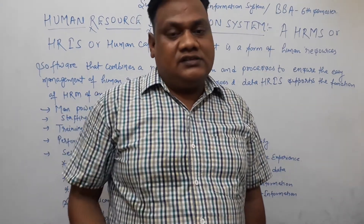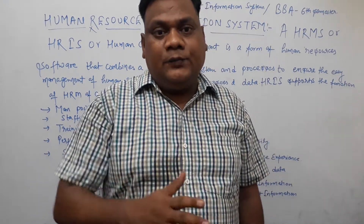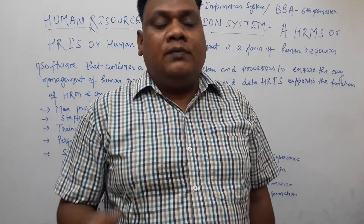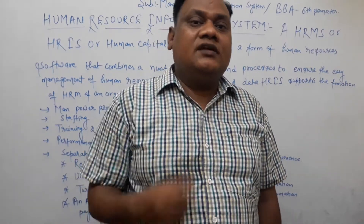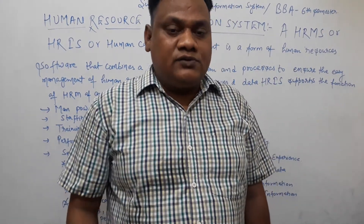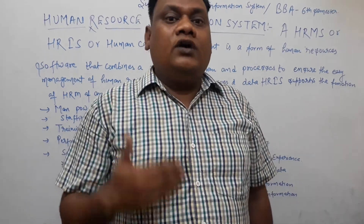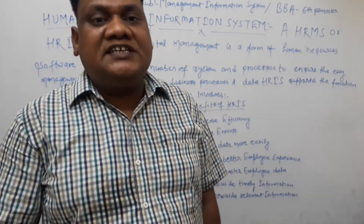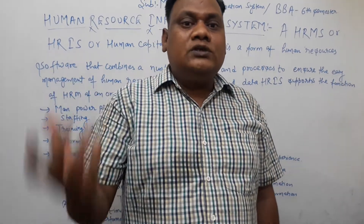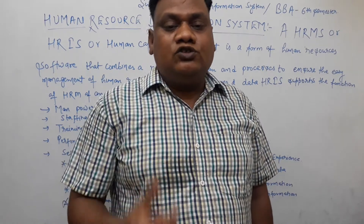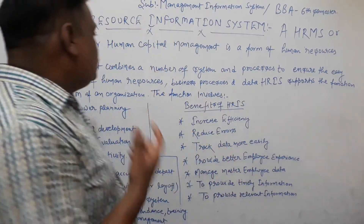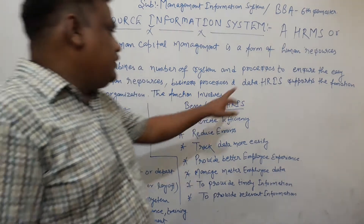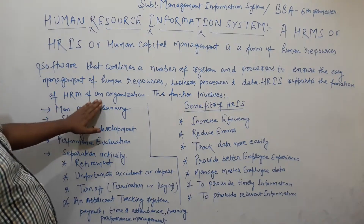The human resource management system records are easily maintained so that we can retrieve them. This plays a very important role in human resource management. If the system is not maintained, then efficiency is reduced. The training and development program is one of the most important functions, and overall, the complete information to manage and track human resource management capability is supported by HRIS as the human resource information system, which supports the functions of HRM in an organization.